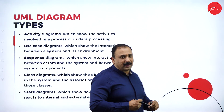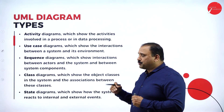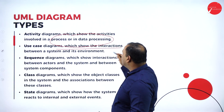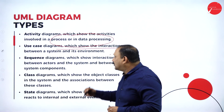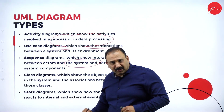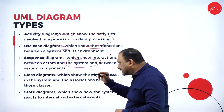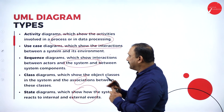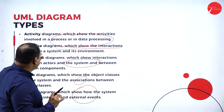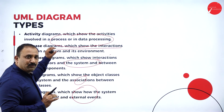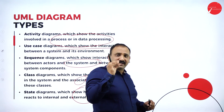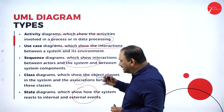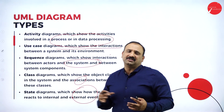Now let's understand the UML diagrams — the Unified Modeling Language. Activity diagrams show how data processing is being done. Use case diagrams show the interaction between a system and its environment. Sequence diagrams show the interaction between actors and between components. Class diagrams show the object classes in the system and their associations. And finally, state diagrams show how the system reacts between internal and external parts. Stage by stage, we use graphical notation to tell how the system is interacting and to show how the system is working altogether.